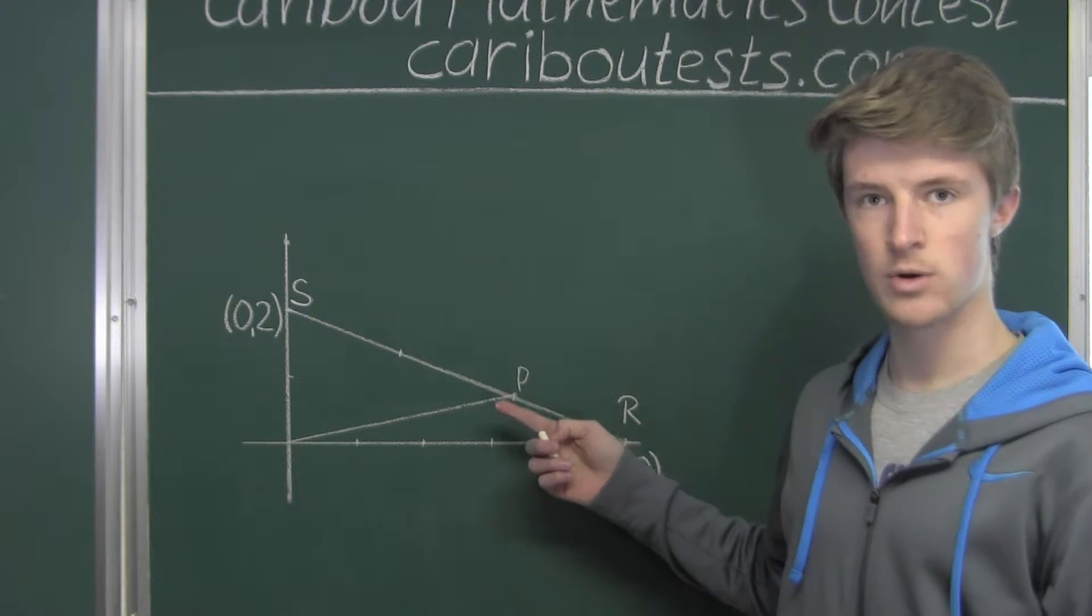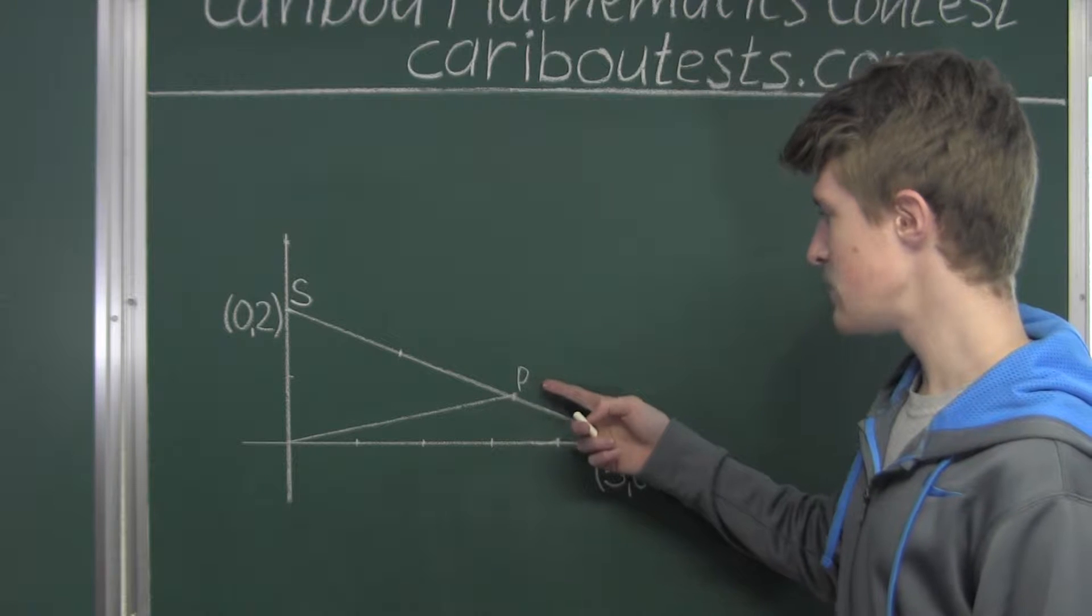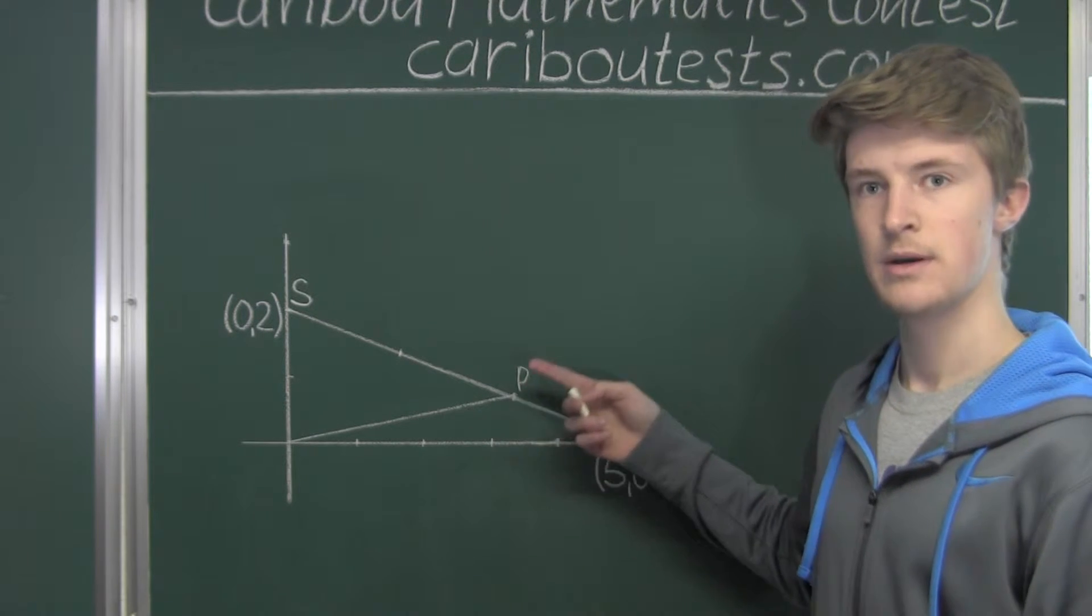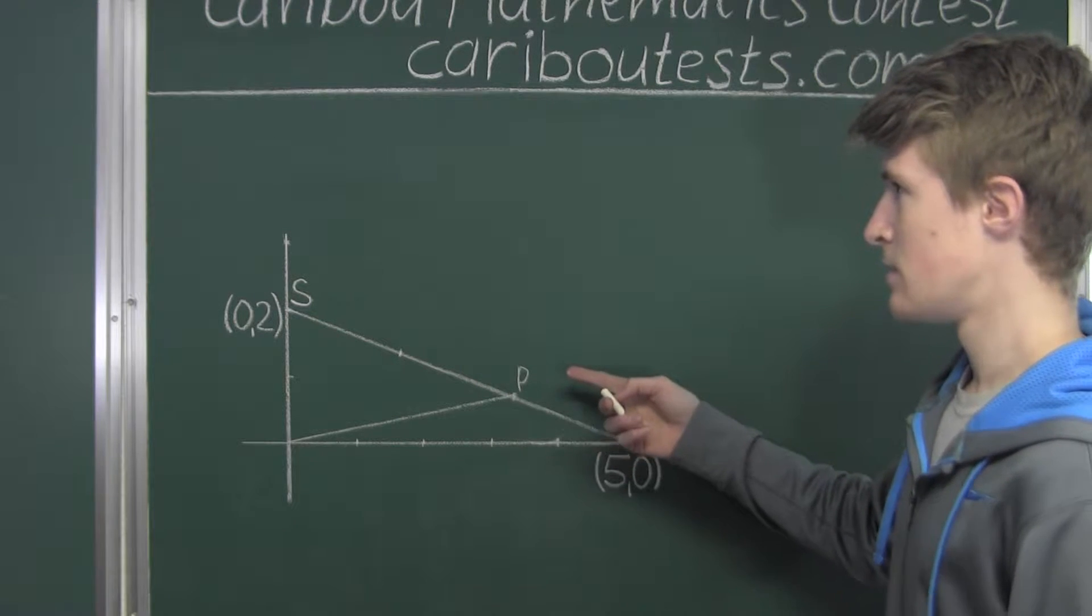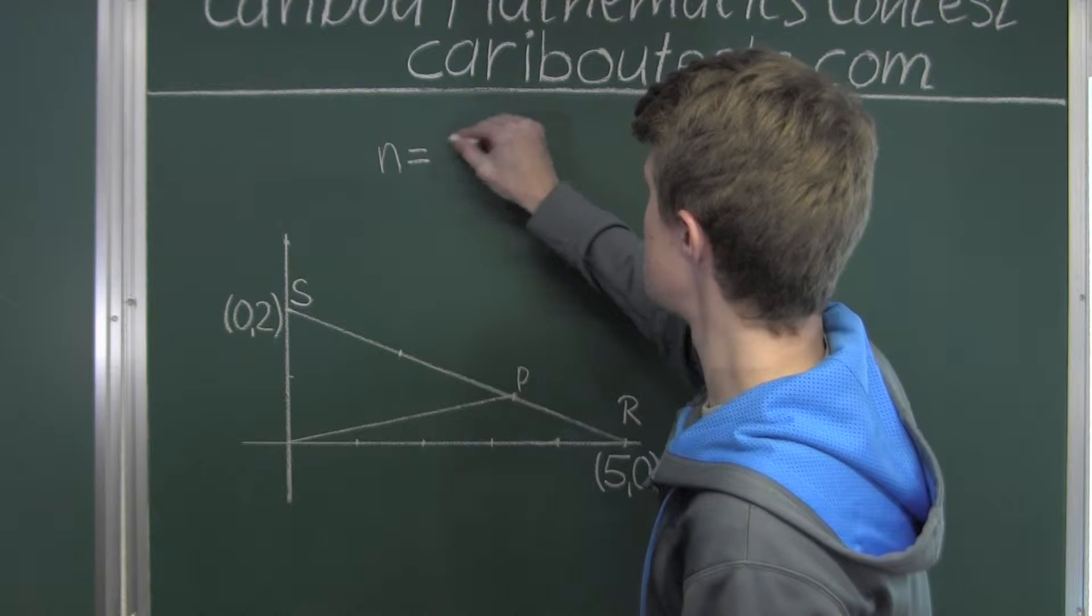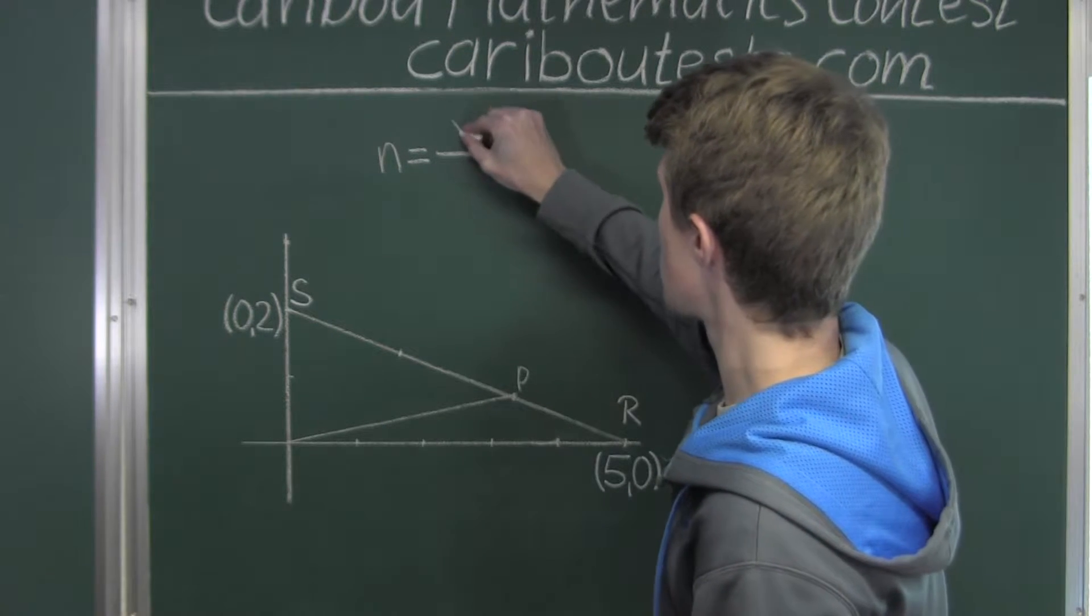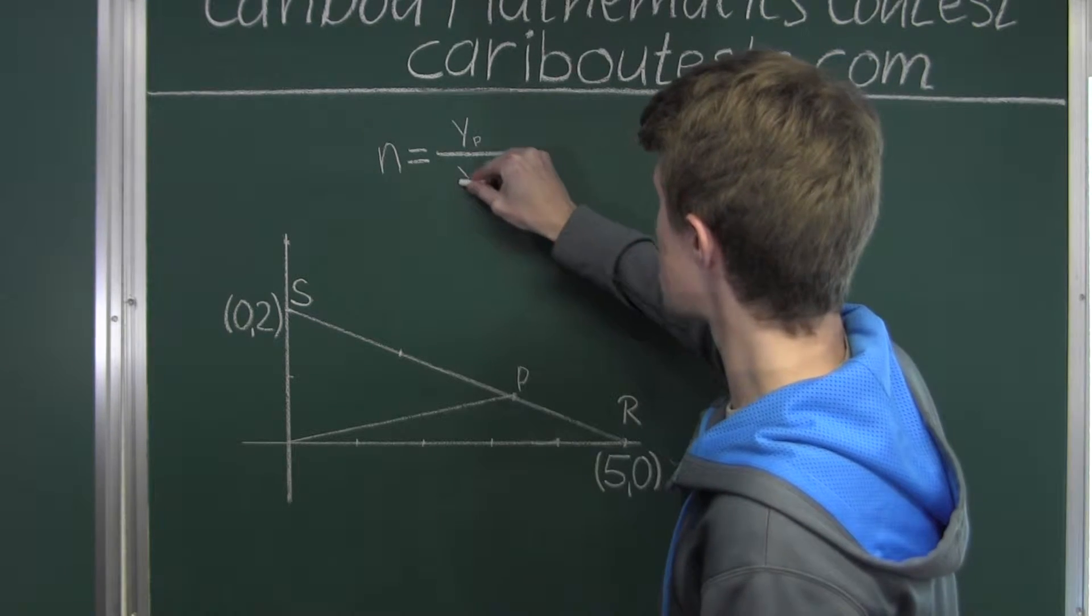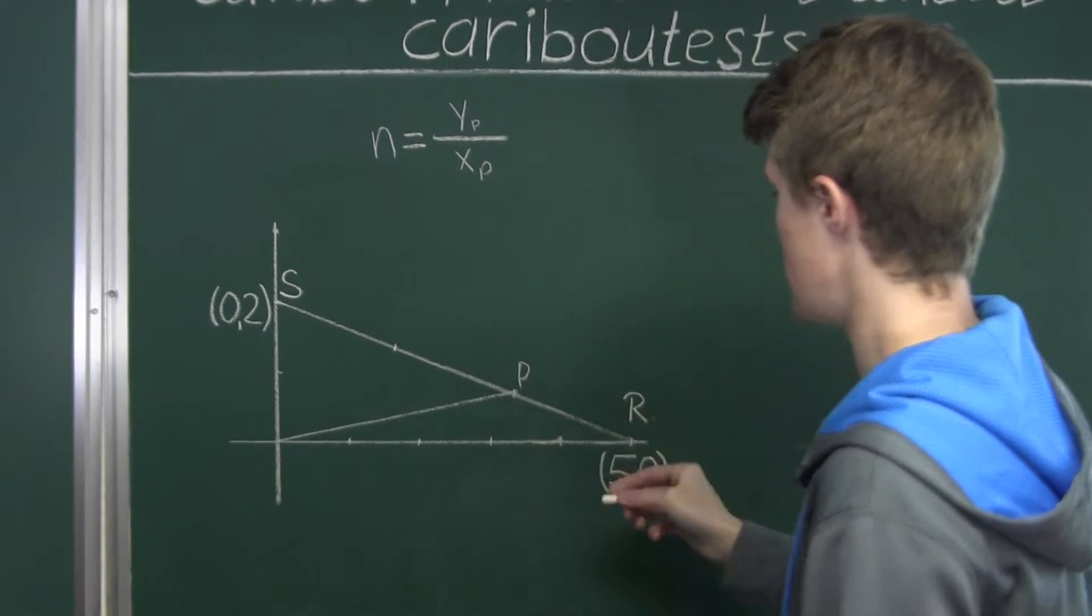And if we find the coordinates of the point P, then we can divide P's Y coordinate by P's X coordinate. So we will just write N, which is a slope, and that is equal to the Y coordinate of this point P divided by the X coordinate of this point P.